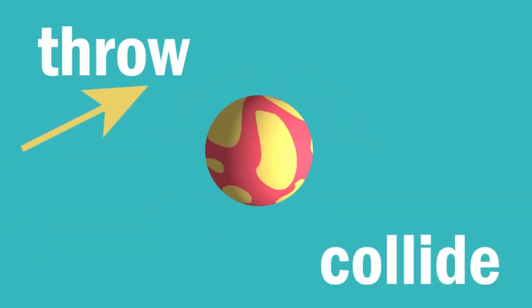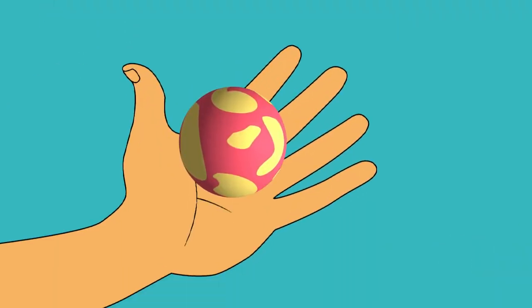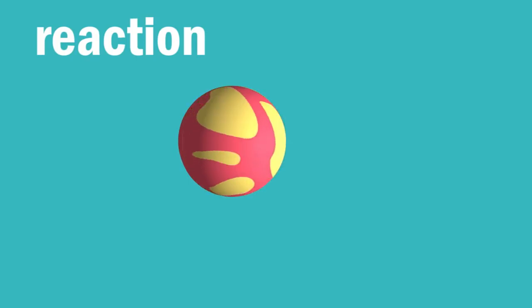If you throw the ball of yellow plasticine at the ball of red plasticine, again they will collide, but this time if you pick up the ball of yellow plasticine, the ball of red plasticine will be stuck to it. There has been a reaction.